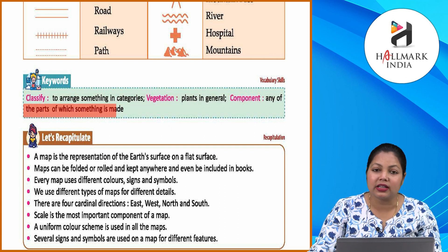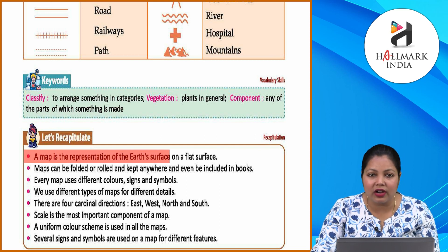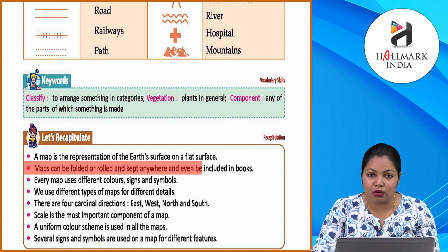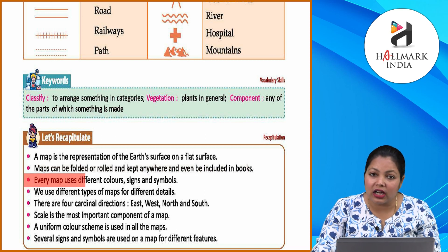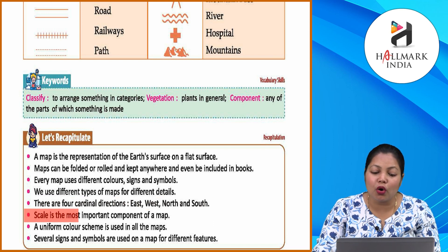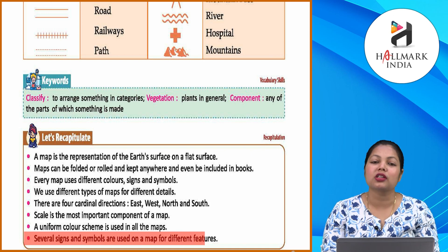Keywords: Classify — to arrange something in categories. Vegetation — plants in general. Component — any of the parts of which something is made. Let's recapitulate: A map is the representation of the earth's surface on a flat surface. Maps can be folded or rolled. Every map uses different colors, signs and symbols. There are four cardinal directions: East, West, North and South. Scale is the most important component of a map. A uniform color scheme is used in all maps. Several signs and symbols are used on a map for different features.